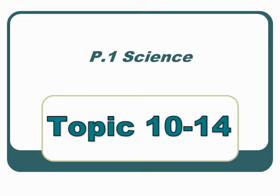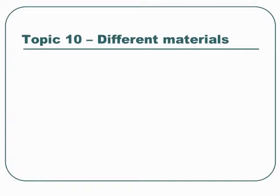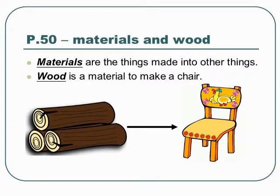P1 Science, Topic 10: Different Materials, Page 50. Materials are the things made into other things. Wood is a material used to make a chair.